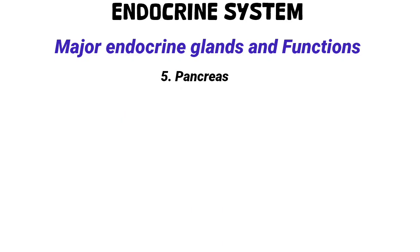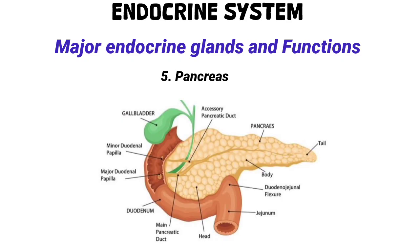Number five: the pancreas. The pancreas is both an exocrine and endocrine organ. Its endocrine part consists of the islets of Langerhans, which secrete insulin to lower blood glucose by promoting its uptake into cells and inhibiting glucose production, and glucagon, which raises blood glucose by stimulating glycogen breakdown and gluconeogenesis in the liver.